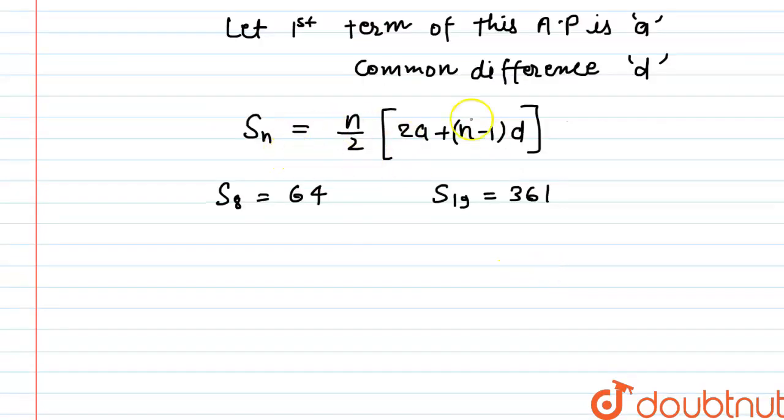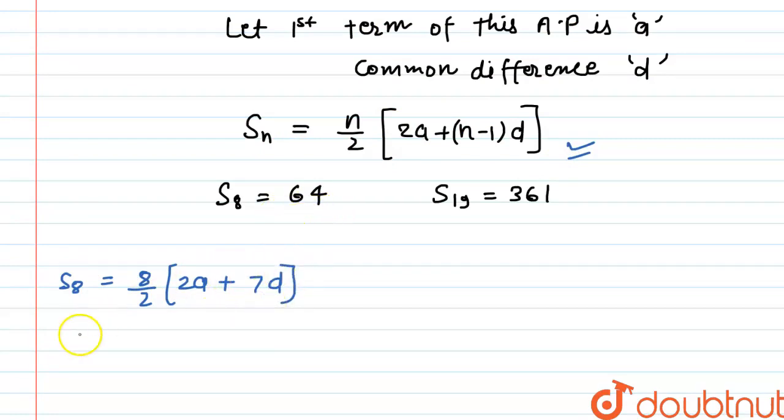Now on replacing n by 8 in this equation we will get S8 is equal to 8 by 2 into 2a plus n minus 1, that will be 7D. And from here S8 is equal to 64, so we can say that 64 is equal to 4 into 2a plus 7D.